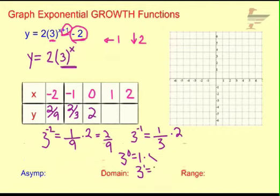3 to the first power is 3, times that 2 is 6. And then 3 to the second power is 9, times that 2 is 18. So here we have all the points that we can plot.